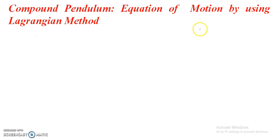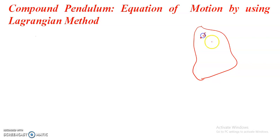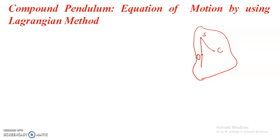Let us assume that our compound pendulum is suspended at point S, and its center of mass is taken as C. It is oscillating in the vertical plane, which is the plane of the screen. We assume that theta is the instantaneous angle which SC makes with the vertical axis, marked as O, and it is making an angle theta with this vertical axis.